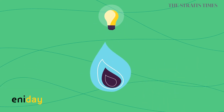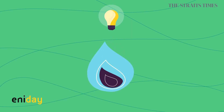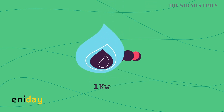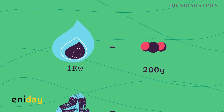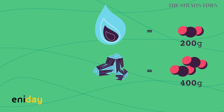Natural gas is the fossil source with the lowest environmental impact, and, for the same amount of energy produced, with the lowest emission of CO2 into the atmosphere. Coal, for example, produces twice as much.